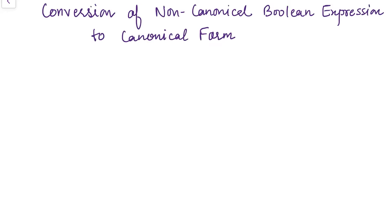Hello everyone, welcome back to the channel. In the last video, I had discussed the canonical representation of the Boolean expression. We have seen that they can be either expressed in the form of sum of products or product of sums. Canonical form means each term contains all input variables, but it is not always the case that we are given with canonical expressions. We might come across Boolean expressions in which one or two variables are missing — that is actually a non-standard form. A non-standard form can be converted into standard form by following certain steps, which are different for SOP expressions and POS expressions.